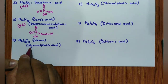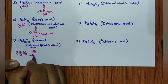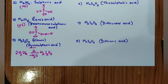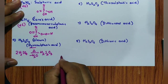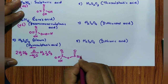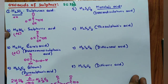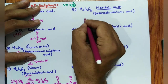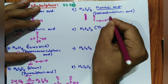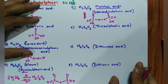H₂S₂O₇ (pyrosulfuric acid): take two sulfuric acid molecules, heat and remove one water molecule — H₂S₂O₇ is left. Structure: S=O, S=O, oxygen bridge, O–H, O–H. Marshall's acid (H₂S₂O₈ / peroxodisulfuric acid): has a peroxide O–O linkage. Structure: S=O, O–O peroxide linkage, S=O, with double bond O, O–H on each side.